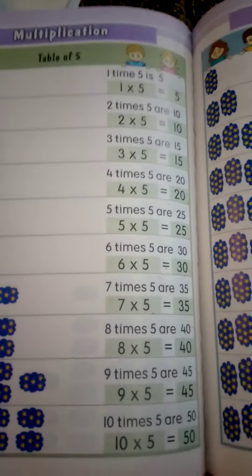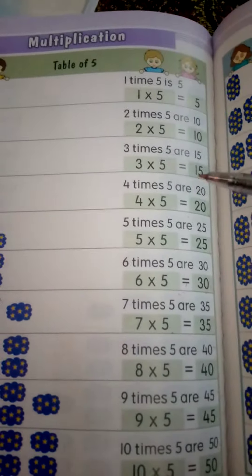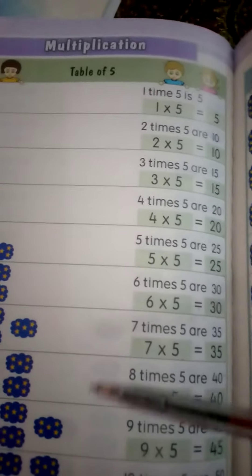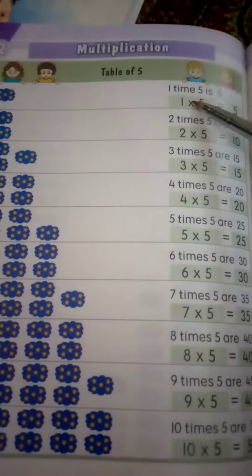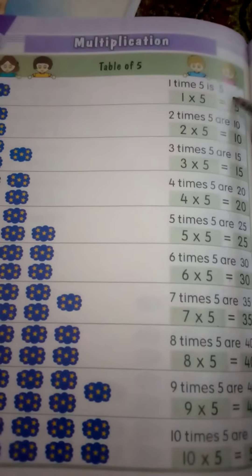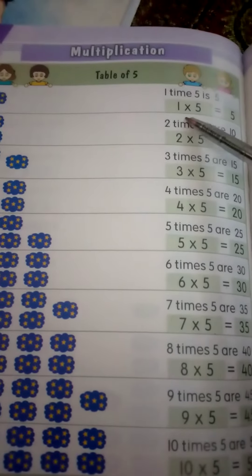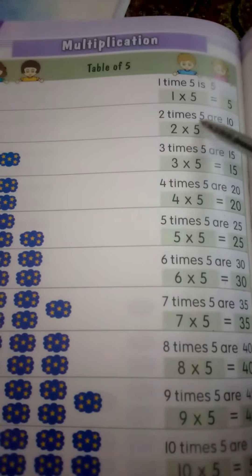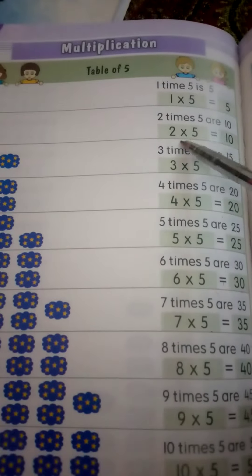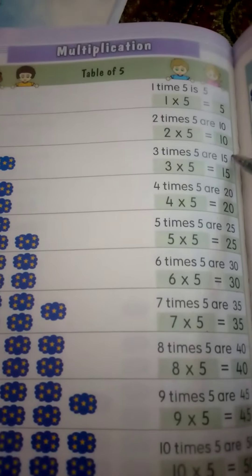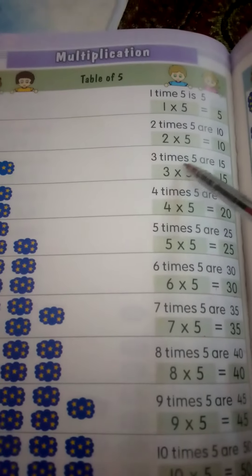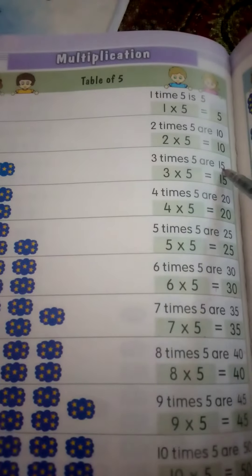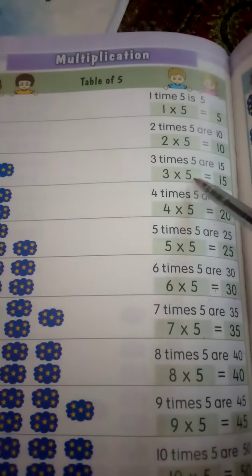Assalamualaikum! Today we are doing the table of 5, page number 86. 1 times 5 is 5, 1 five is 5. 2 times 5 are 10, 2 fives are 10. 3 times 5 are 15, 3 fives are 15.